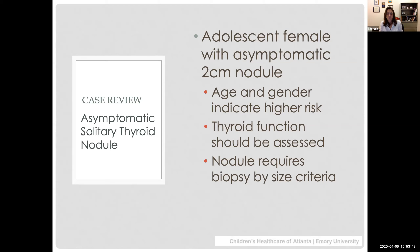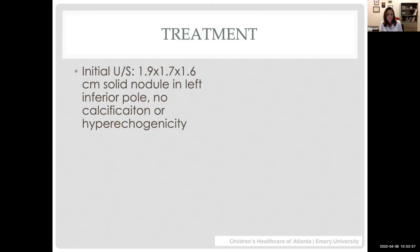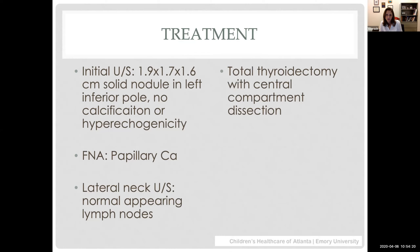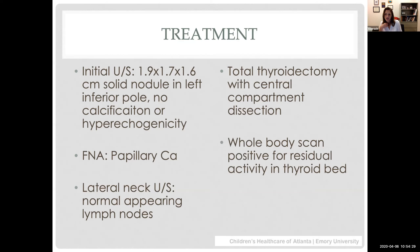For our 14-year-old with the 2 cm nodule — her age and gender placed her in a higher-risk group, and the nodule required biopsy by size criteria. Her ultrasound was consistent with physical exam: a solid and relatively homogeneous 2 cm nodule with no lymphadenopathy. FNA was positive for papillary cancer. Lateral neck ultrasound was completely normal. She underwent a total thyroidectomy with central compartment dissection, had one or two positive central compartment nodes, and had tiny residual uptake in the thyroid bed on her whole-body postoperative scan, so she was treated with RAI.